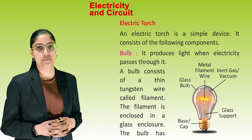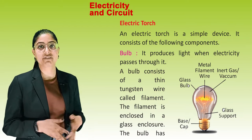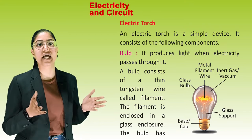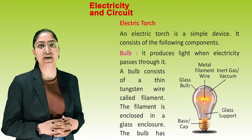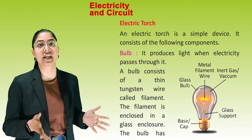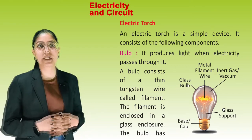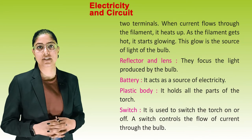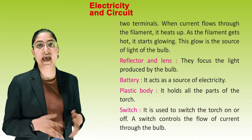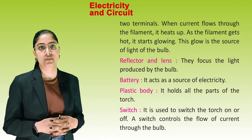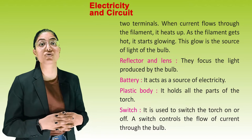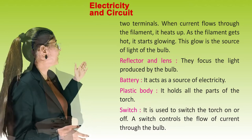First component is the bulb. It produces light when electricity passes through it. A bulb consists of a thin tungsten wire called a filament, which is enclosed in a glass enclosure. The bulb has two terminals. When current flows through the filament, it heats up, gets hot, and starts glowing. This glow is the source of light of the bulb.